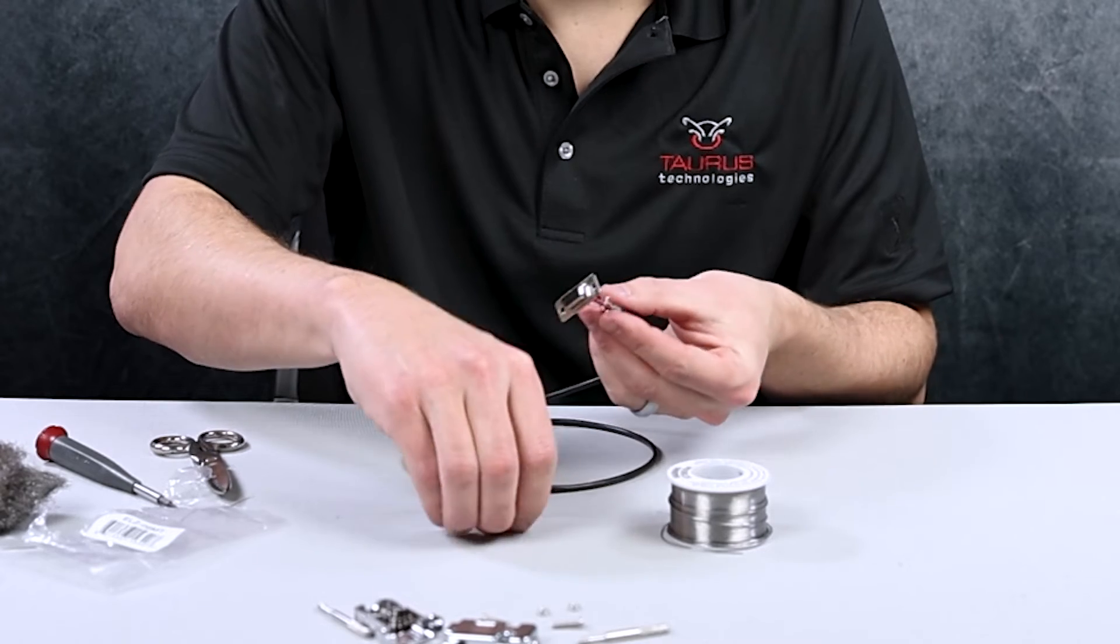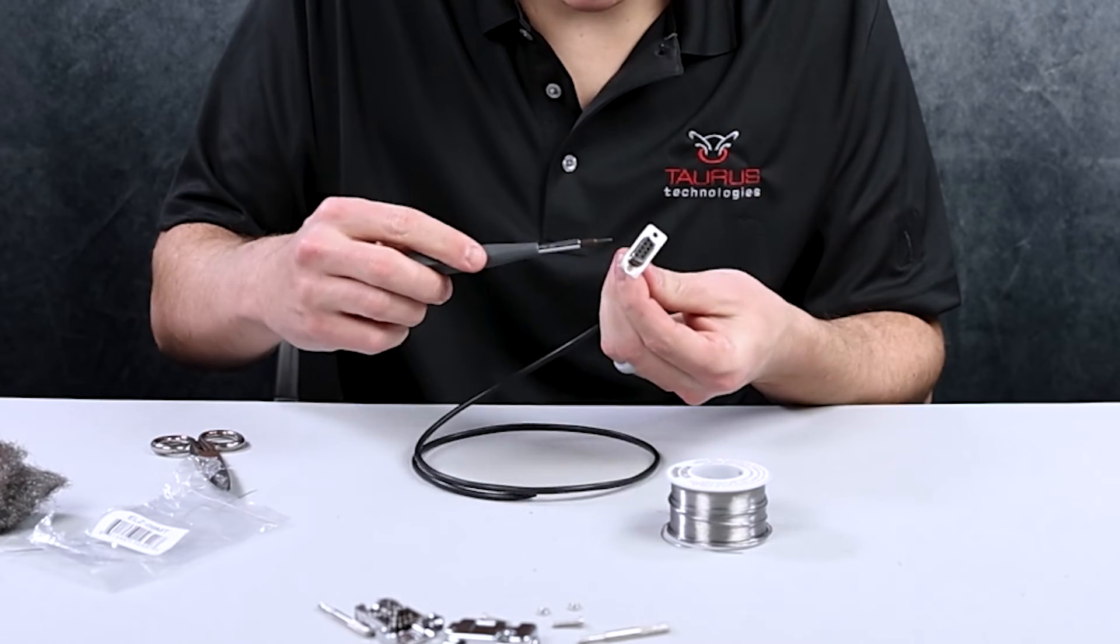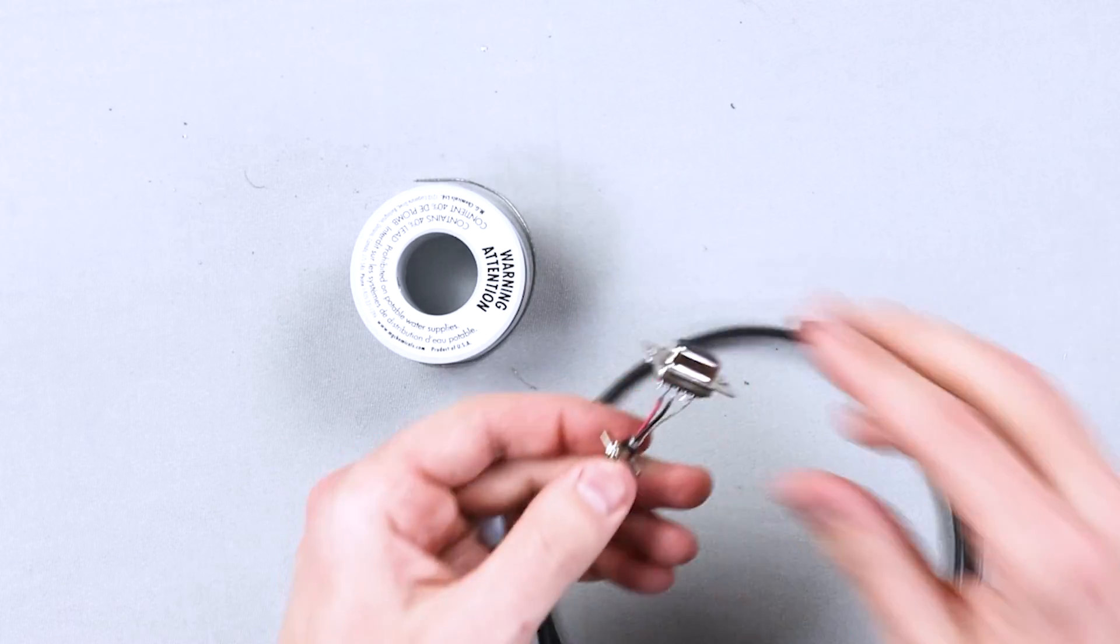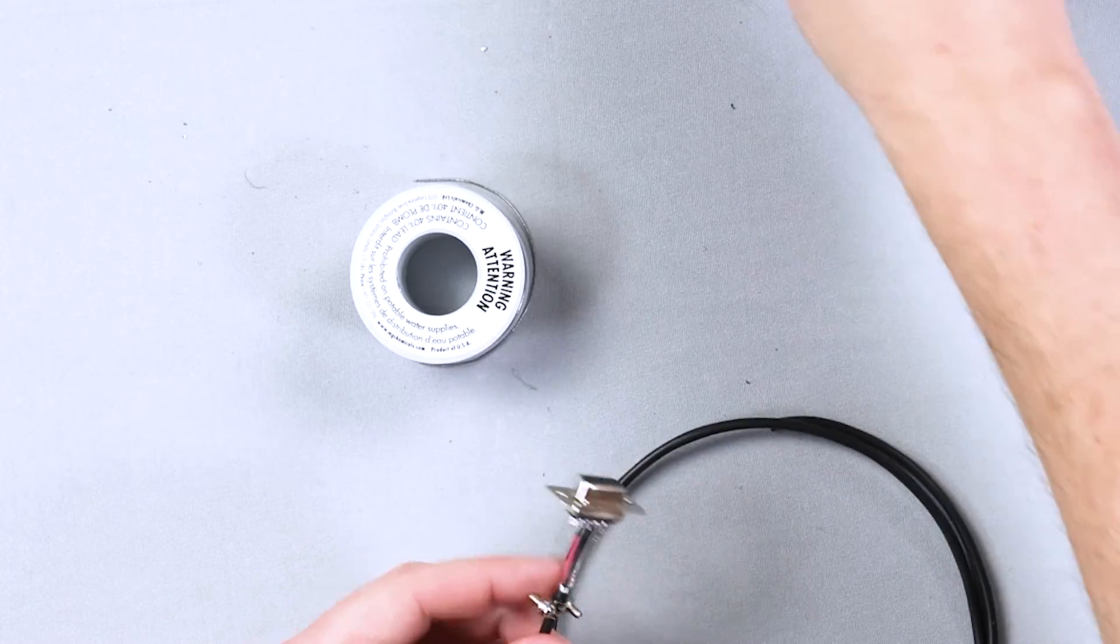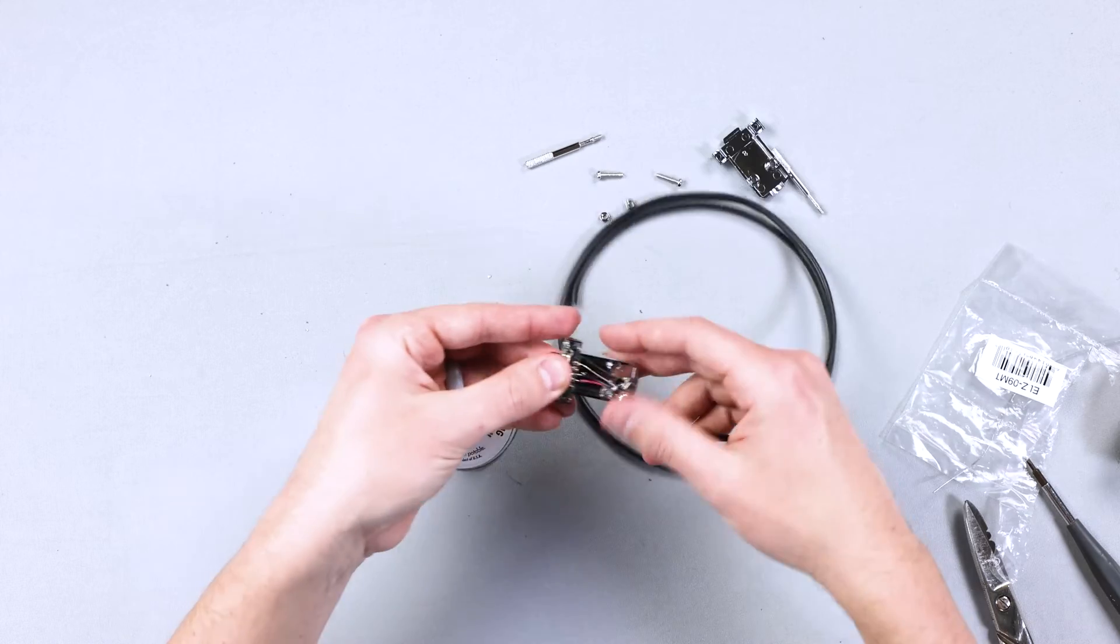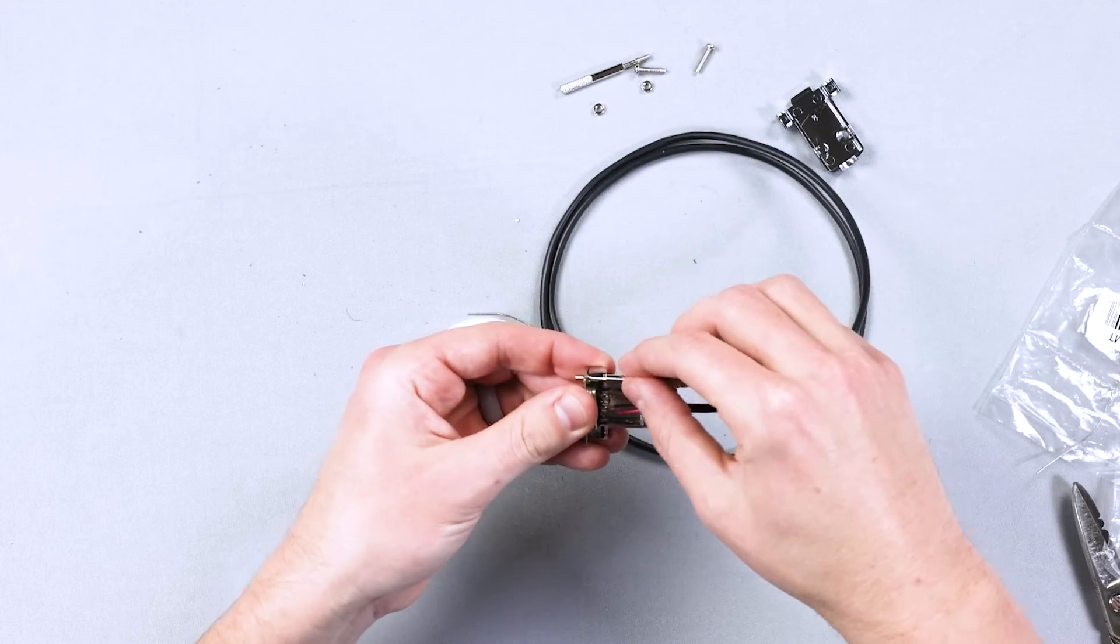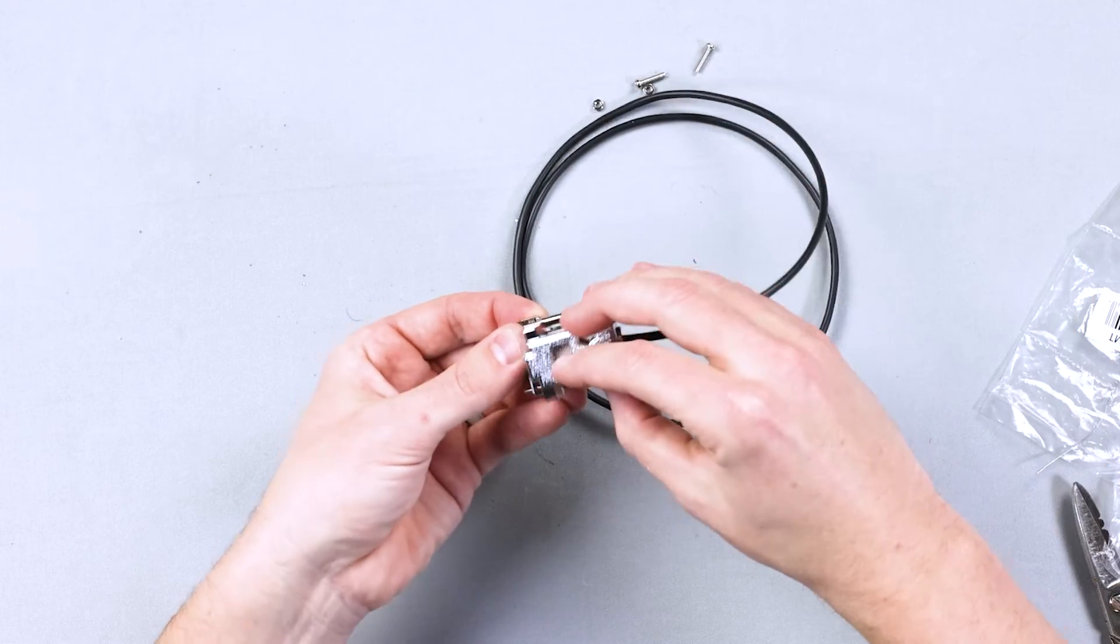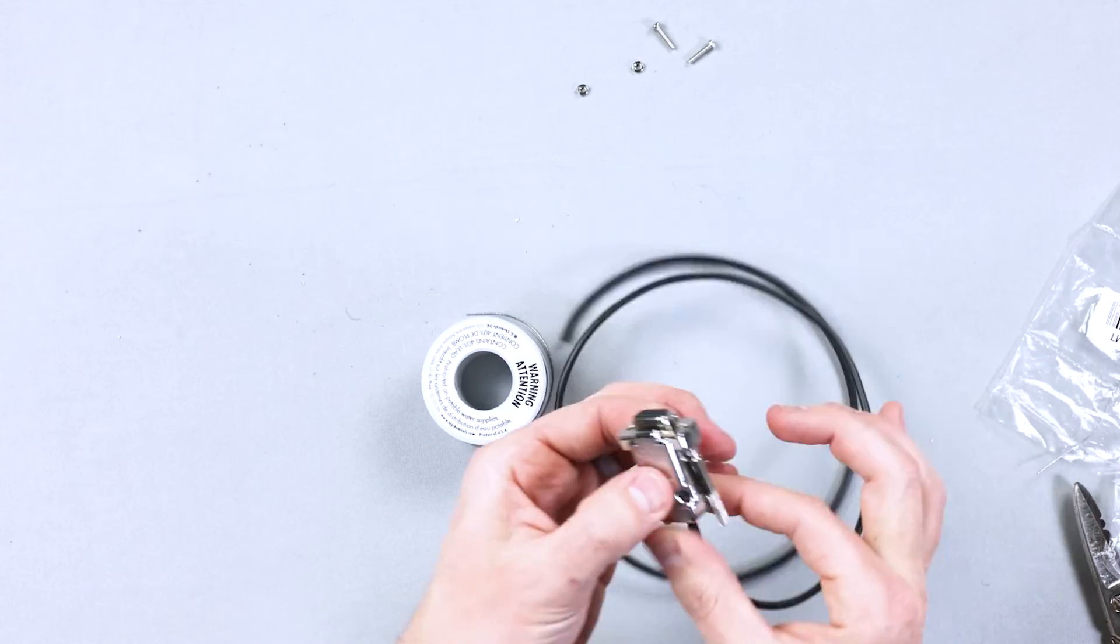So now what you're going to do is you're going to take the DB9 and place it into the hood. You're going to put the strain relief in the spot for the strain relief. You're going to grab one of these, place it there like that. Grab one of these, place it there like that. And then you take the other second half of the hood, put it on like that. So now effectively that is your DB9.